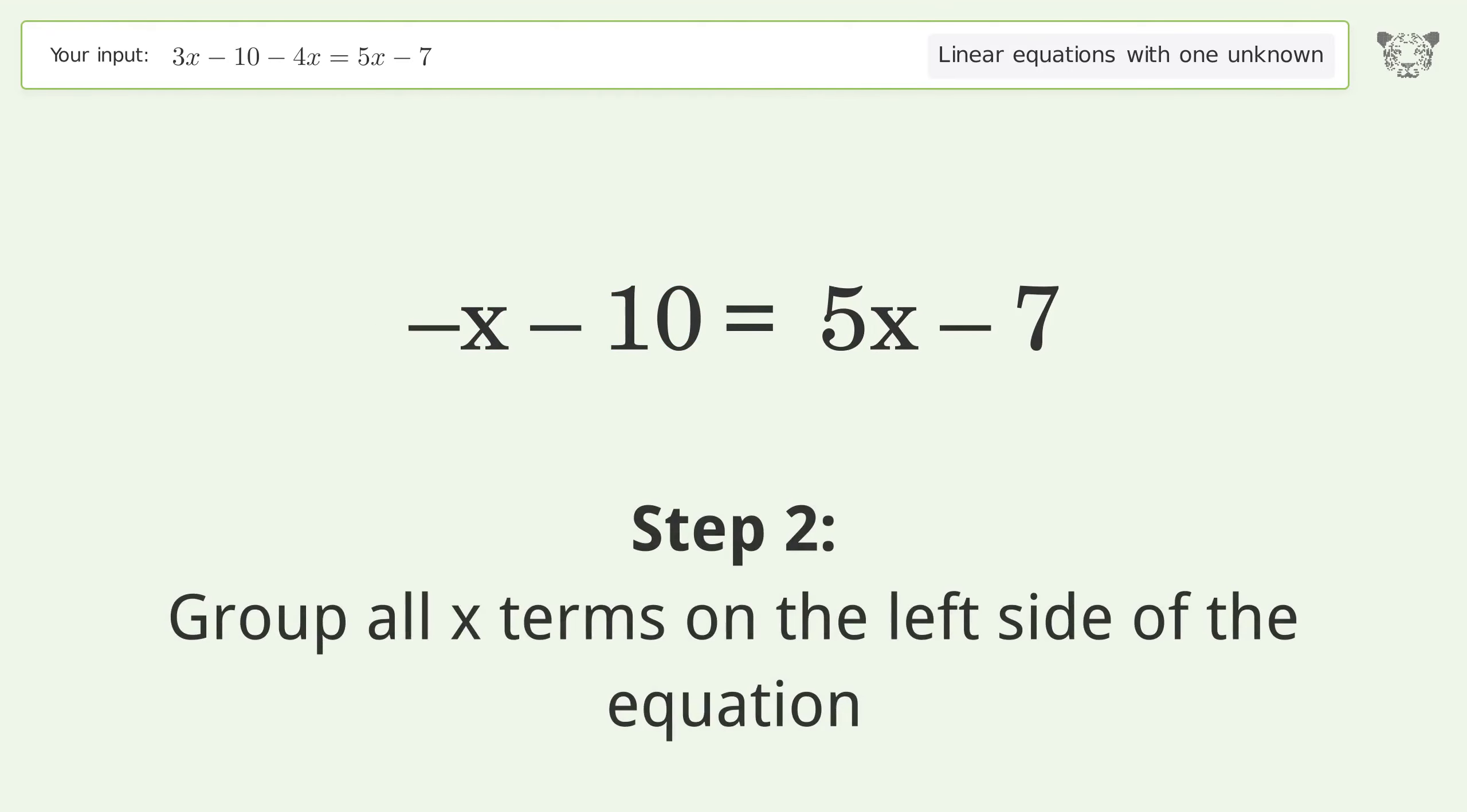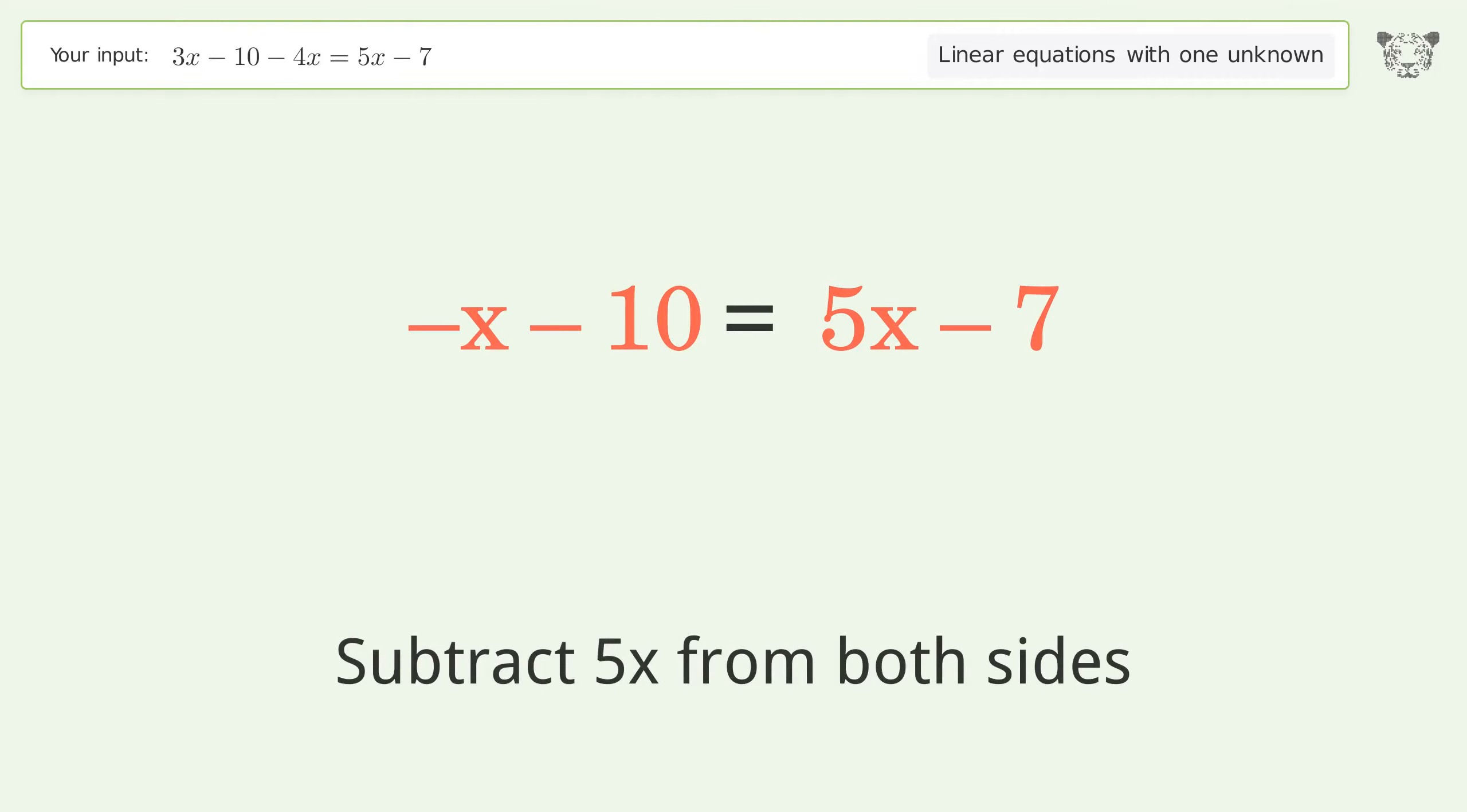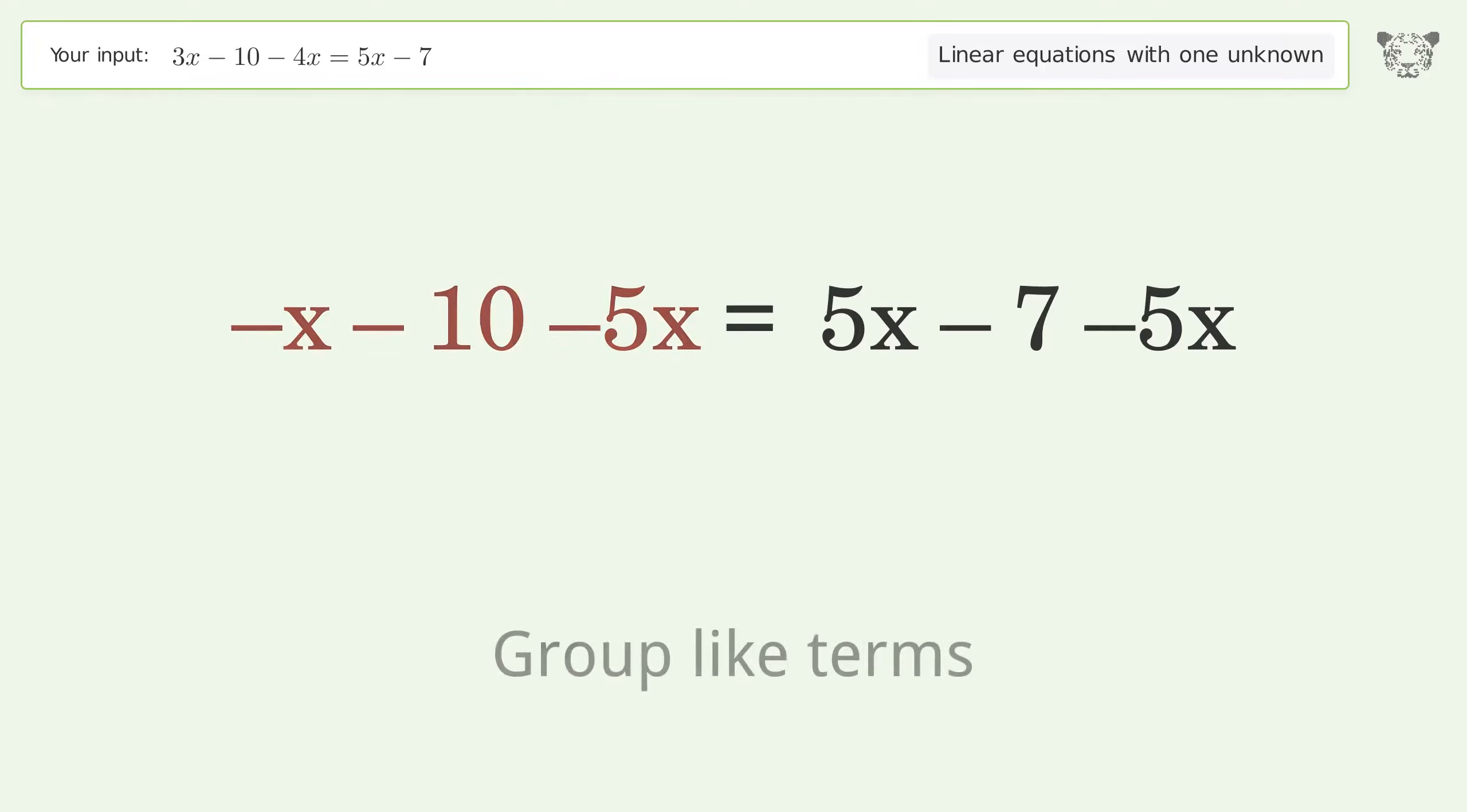Group all x terms on the left side of the equation. Subtract 5x from both sides. Group like terms.